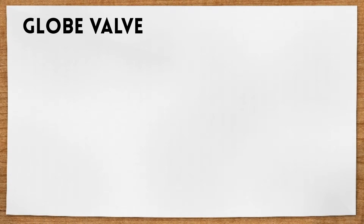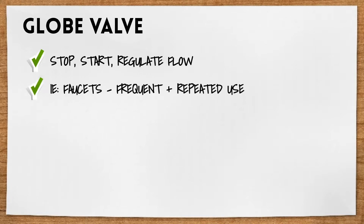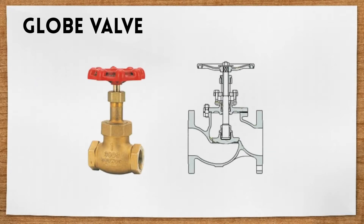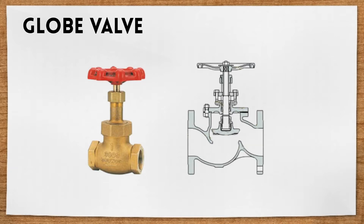The globe valve is primarily designed to stop, start, and regulate flow. These are used in locations such as faucets for frequent and repeated use. Globe valves have a high pressure drop even in fully open conditions and offer substantial resistance to fluid flow. You can see in the diagram the shape that would cause more friction, and this is the seat that is controlled by the handle, which would move up or down to turn the water supply on or off, or it could be left at some middle point to control flow.